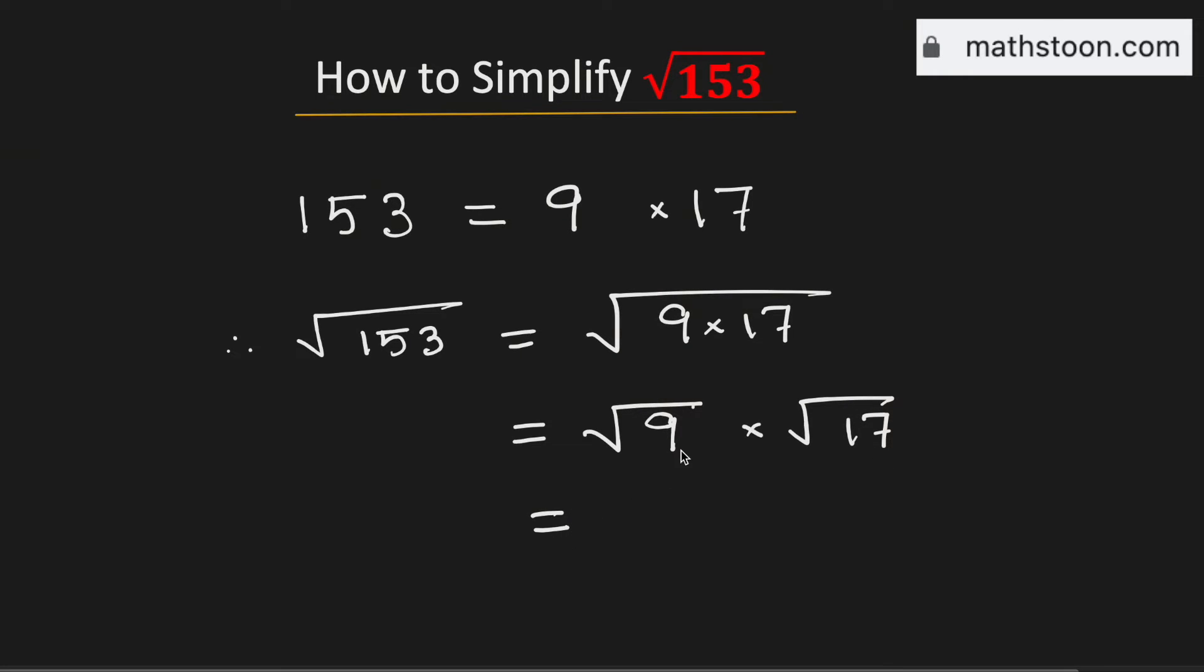We know that square root of 9 is 3 and square root of 17 remains the same as it cannot be simplified further. Therefore, 3 square root of 17 is the simplified form of the square root of 153. And this is our final answer.